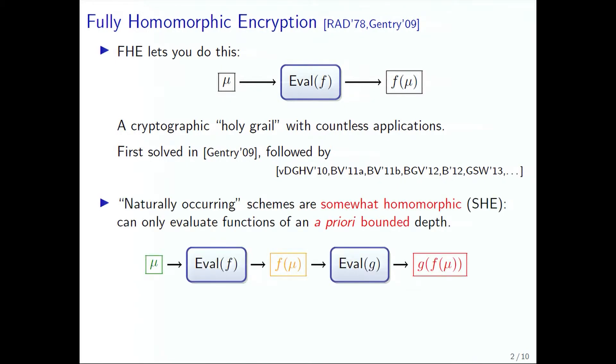Schemes that are naturally occurring are what we call somewhat homomorphic. The ciphertexts have a level of noise in them, and they only decrypt properly if the noise is below a certain level. Doing evaluations on fresh ciphertext will raise the noise level, which we've denoted in yellow. Eventually, if we keep doing operations, you won't be able to decrypt properly. You can only evaluate functions of a depth that's a priori bounded. In order to get around this, we use bootstrapping to achieve unbounded fully homomorphic encryption.